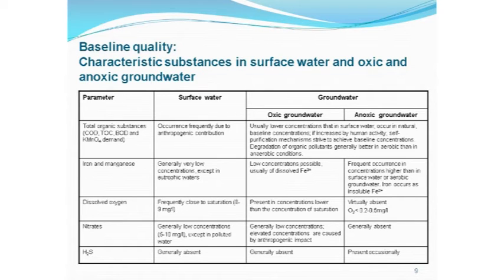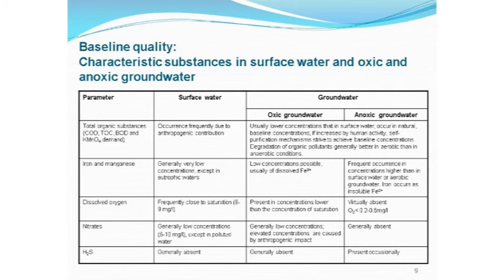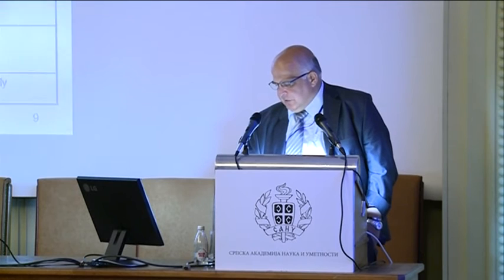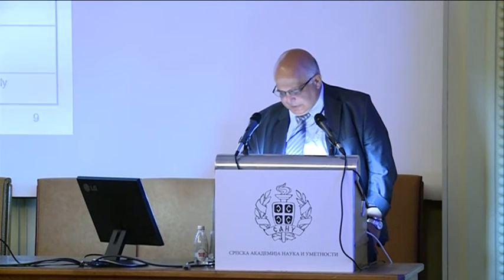Iron behaves differently under oxic and anoxic conditions, as does dissolved oxygen — these are very different between surface and groundwater. It is important to say that the redox state in the aquifer does not depend only on consumption of organic matter, but also on mineralogical consumption. This is very interesting and not very well explored, especially due to pyrite or ferro-sulfides in the aquifer. There are also differences between hydrogen sulfide and other materials.